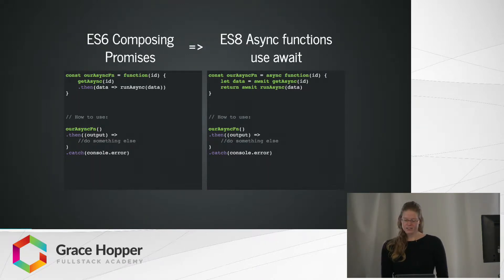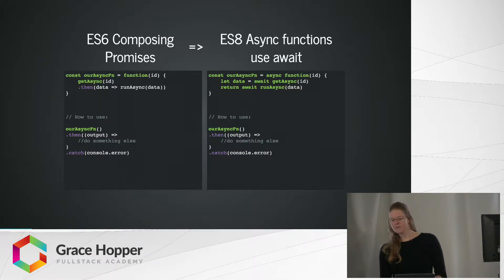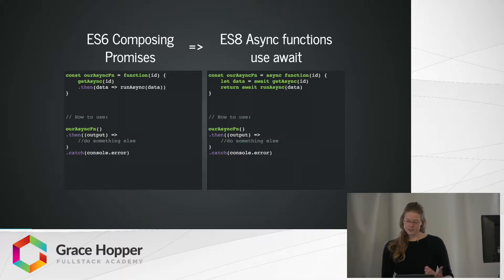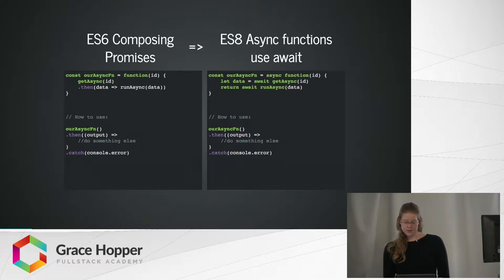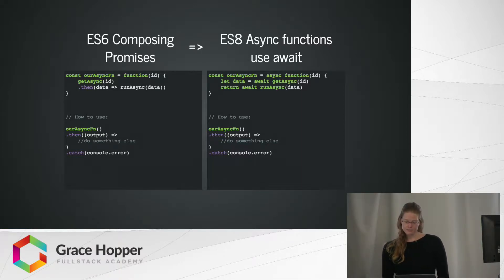On the left is an example of composing promises as we are used to in a dummy function, our async function. On the right is the same function rewritten with async and await. The ES8 version is conveniently labeled with an async function by the keyword async, and inside, everything that returns a promise is placed after the keyword await. So we read: let data equals the await of getAsyncID, and then return the await of runAsync on the data. In both cases, our async function uses and returns promises.